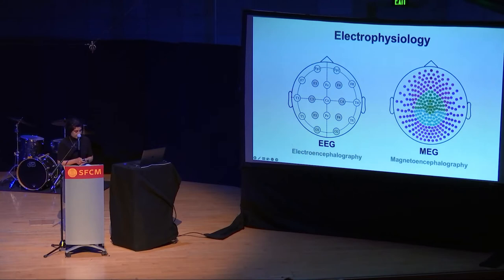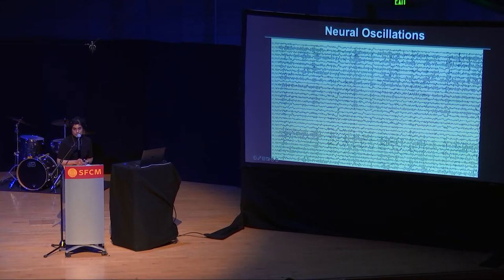These wavy patterns we see in an EEG or an MEG, we call them neural oscillations. And what they tell us is the electrical activity generated by millions and millions of neurons firing inside our brains. When we are awake and active, these neural oscillations are fast.